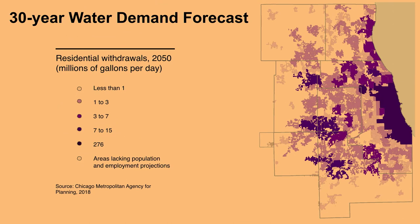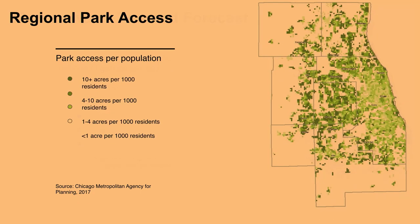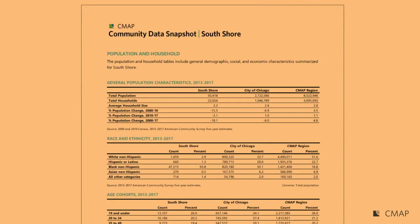We also have non-transportation datasets: a 30-year water demand forecast created for On To 2050 that forecasts to 2050 on residential withdrawals, with an industrial version as well. We have a lot of land use data, regional park access data — parks per population and acres per population. Another useful product: summaries of Census data in nice formats called community data snapshots, available as downloadable PDFs for almost any geography — counties, municipalities, Chicago community areas — updated when the Census is updated.